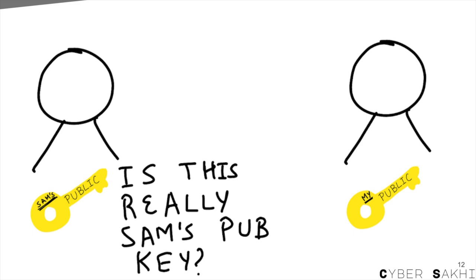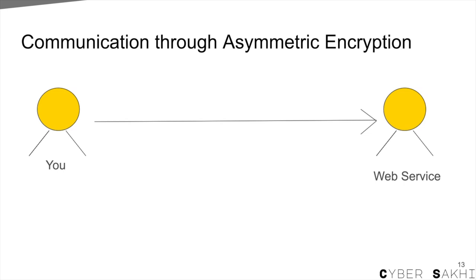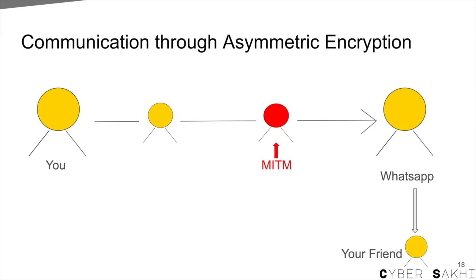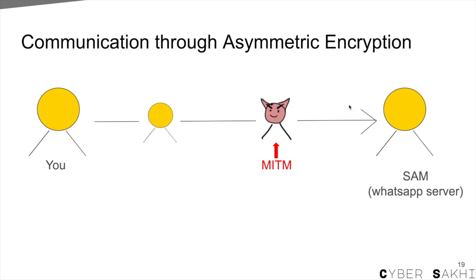Yes — man in the middle, or in our case, Joker in the middle. On the internet, how does your phone or computer exchange public keys with all the web services you use — Google, Instagram, even WhatsApp? There are intermediate servers through which your data travels to the destination servers. So the man in the middle in this attack represents a bad server along the way. If you're having a conversation through WhatsApp, your messages first go to WhatsApp.com and then to your friend. The bad servers along the way forward your messages through the destination server — in this case WhatsApp.